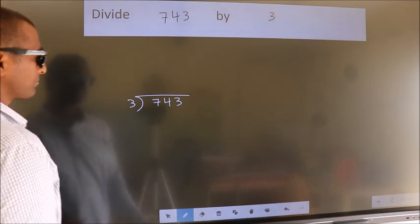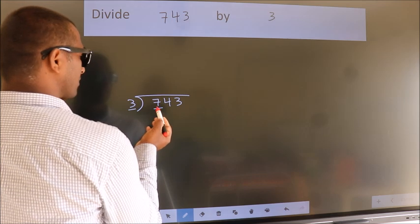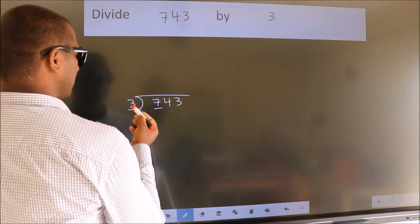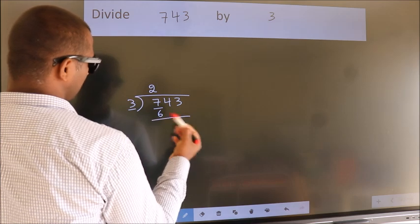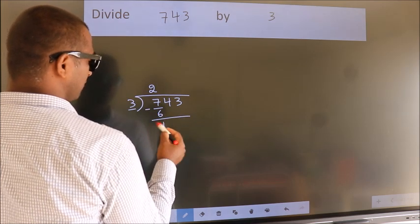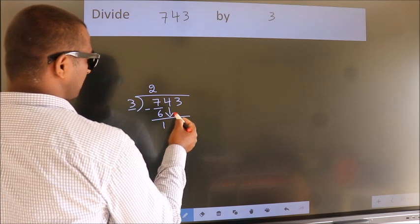Next, here we have 7, here 3. A number close to 7 in the 3 table is 3 times 2 is 6. Now we should subtract. We get 1. After this, bring down the next number.